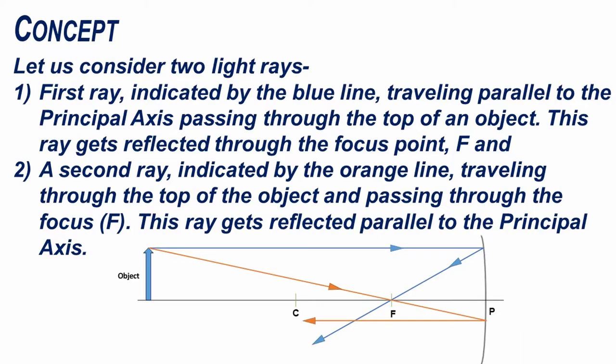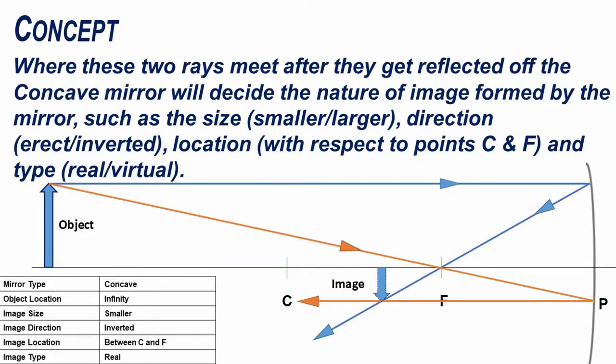Let us consider two light rays. The first ray, indicated by the blue line, travels parallel to the principal axis and passes through the top of an object. This ray gets reflected through the focus point F. The second ray, indicated by the orange line, travels through the top of the object and passes through the focus point F, and gets reflected parallel to the principal axis. Where these two rays meet after they get reflected off the concave mirror will decide the nature of the image formed by the mirror.